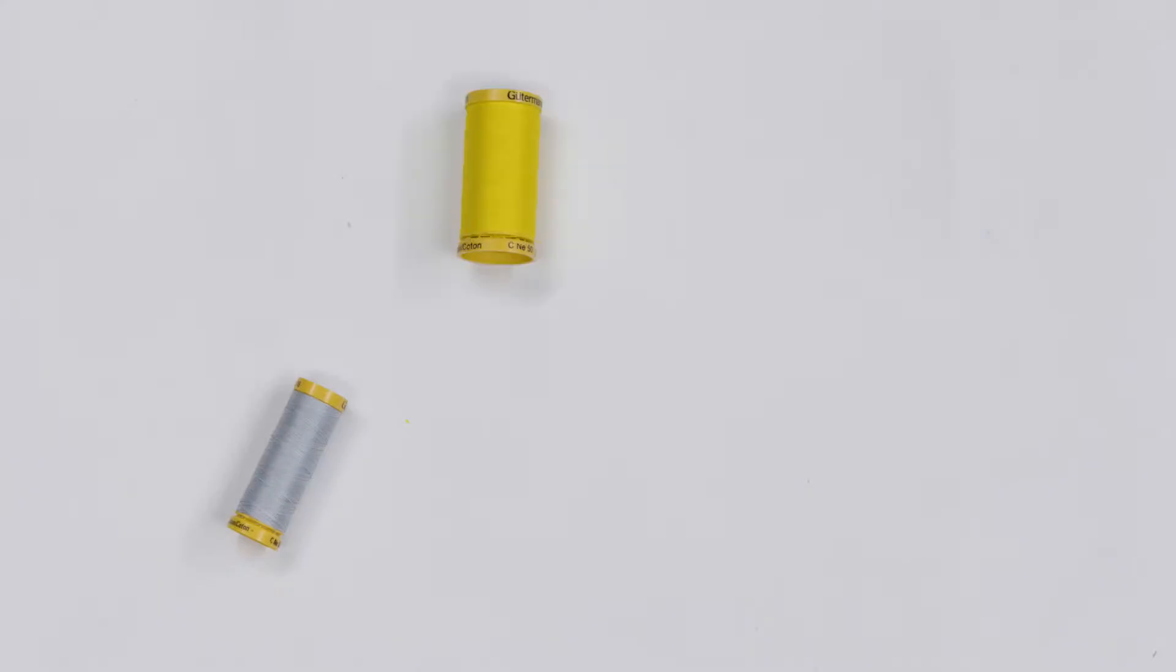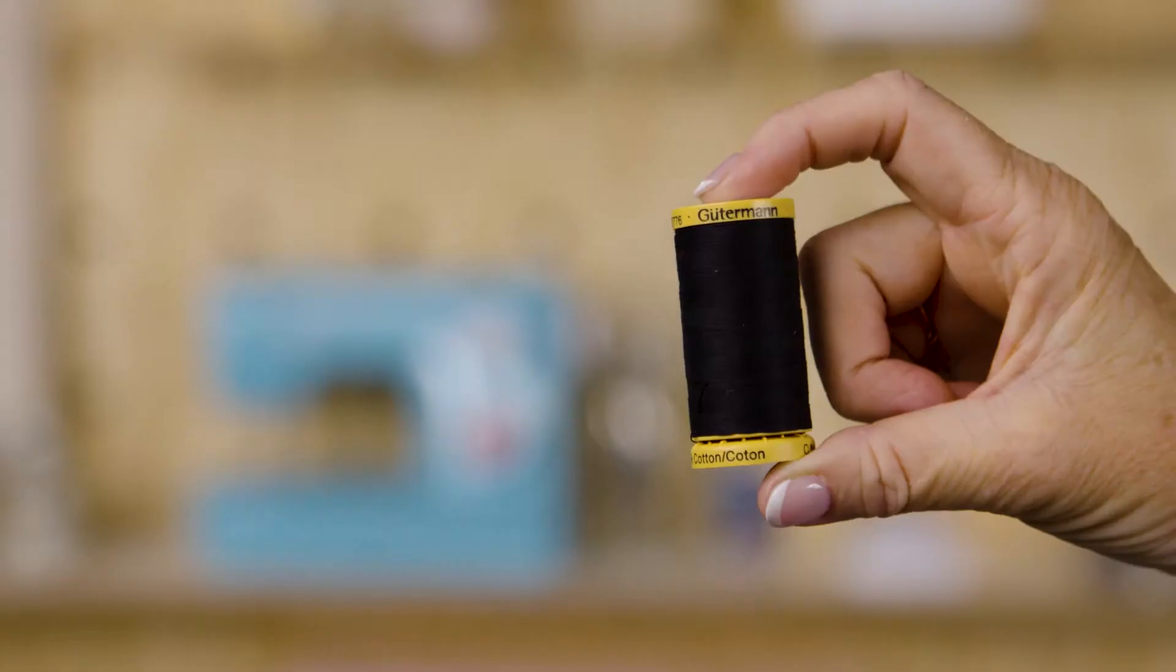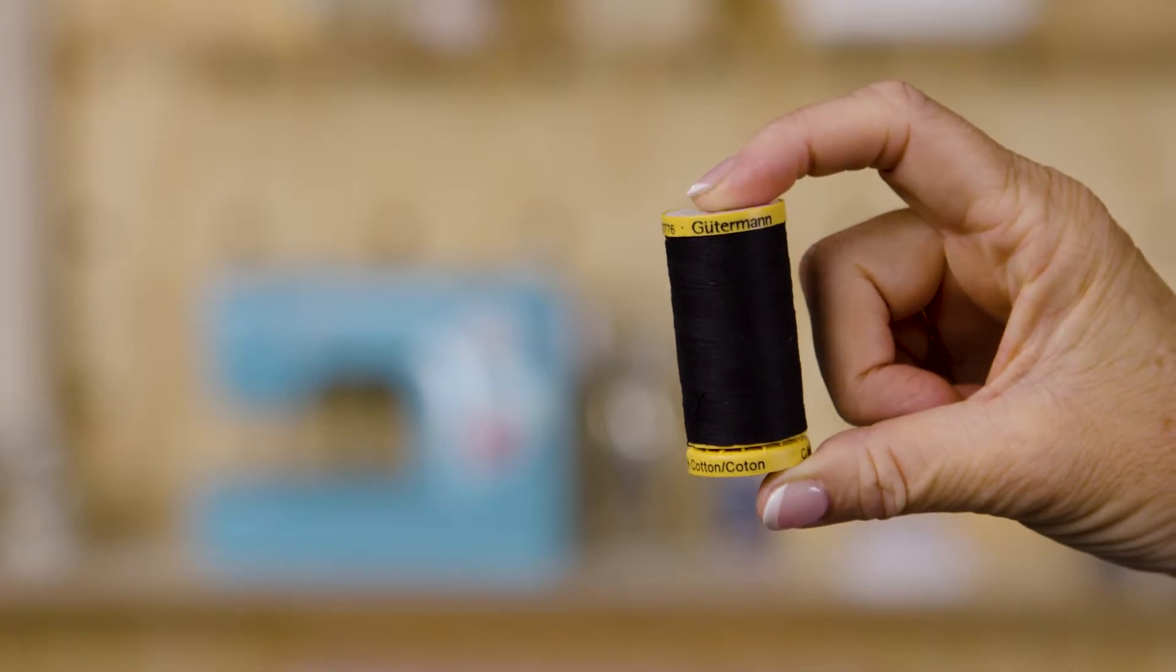Cotton thread is ideal with natural fabrics like cotton and linen and it's popular for quilting projects too. Cotton thread doesn't stretch, has a matte finish and can also withstand the high heat of your iron.